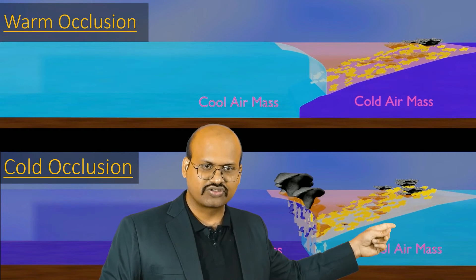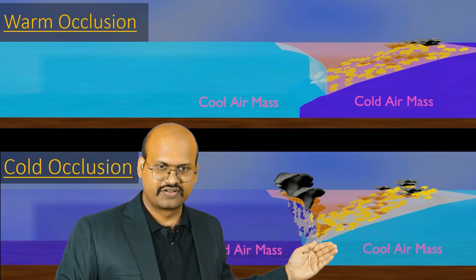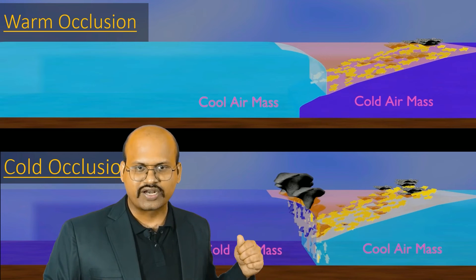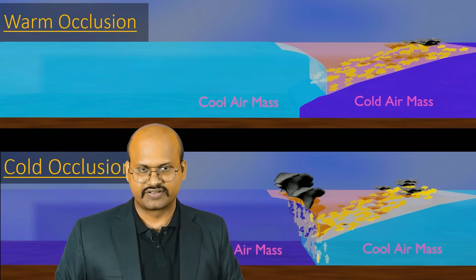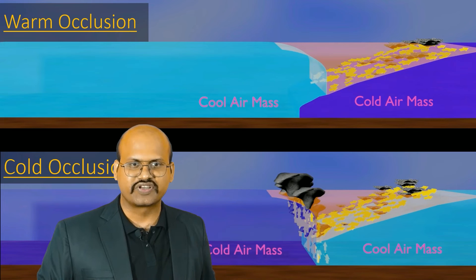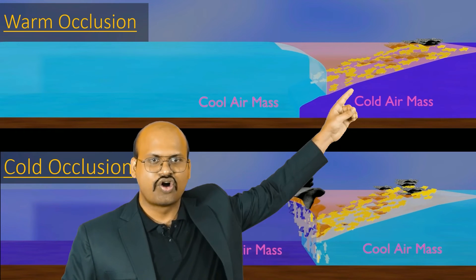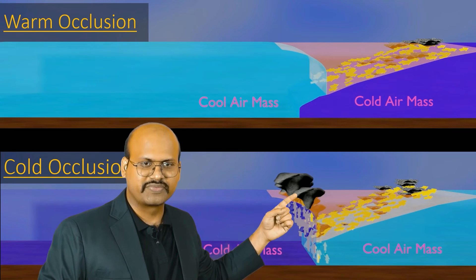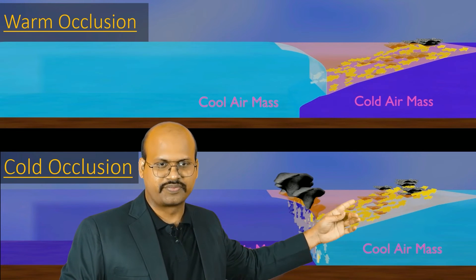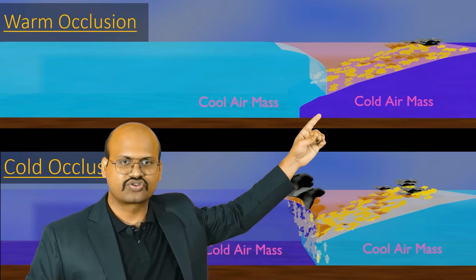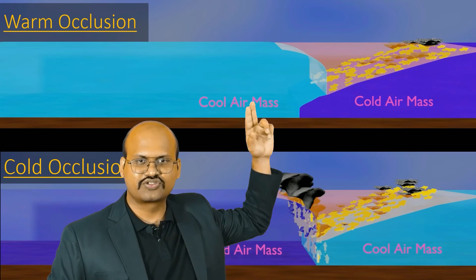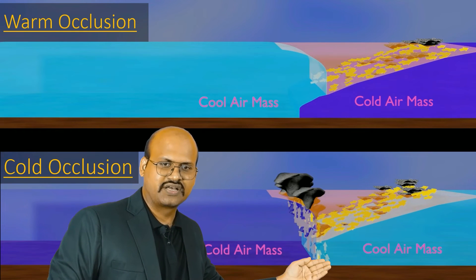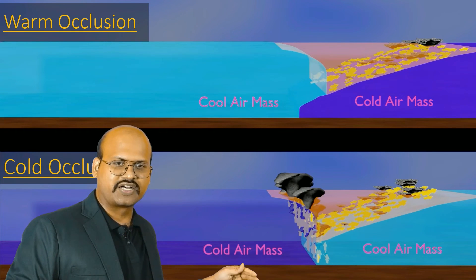So in cold occlusion we see that both types of clouds are present, while in warm occlusion we saw only one type of clouds. Moreover in cold occlusion the air mass is also getting replaced, while in warm occlusion the cool air mass which was coming was getting uplifted. In warm occlusion only one type of cloud is formed, but in cold occlusion we see cumulonimbus as well as simpler clouds are formed.